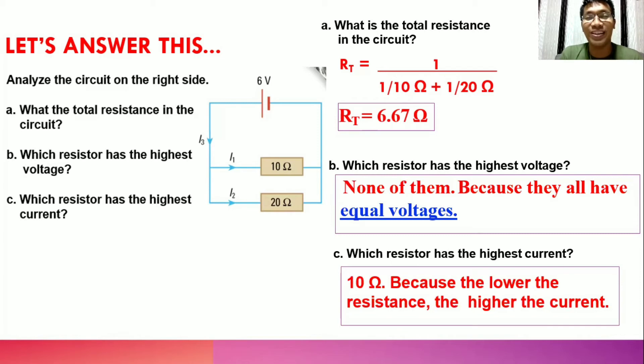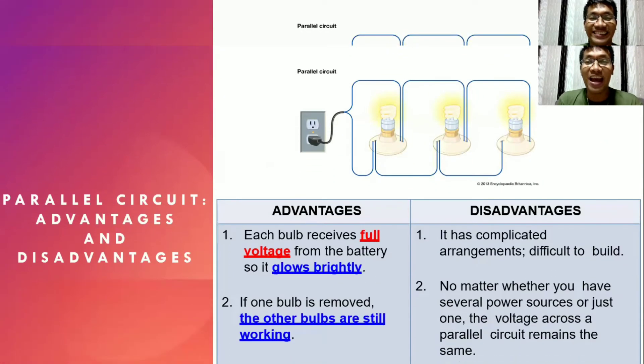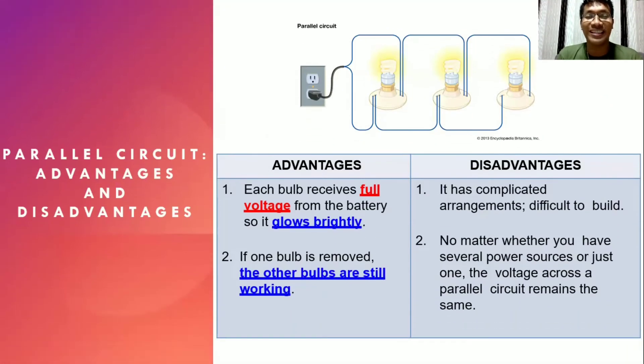Learning this, we can now discuss the advantages and disadvantages of a parallel circuit. The first advantage is that each bulb receives full voltage from the battery, so it glows brightly. Second, if one bulb is removed, the other bulbs are still working, since we have several pathways for the current to flow.